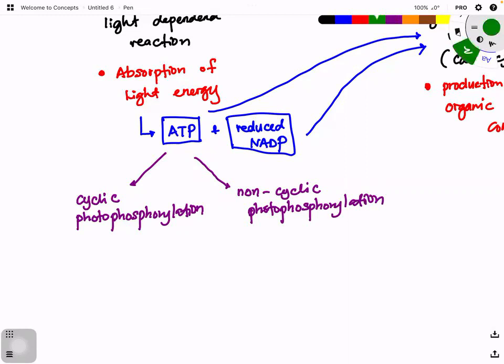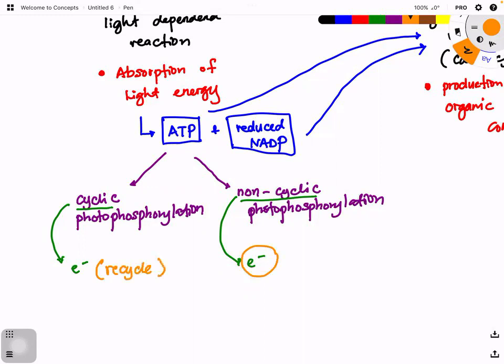The terms cyclic and non-cyclic refer to the movement of electrons. In cyclic photophosphorylation, the electrons are recycled — the molecule that donated electrons gains them back, so there is no loss of electrons. In non-cyclic photophosphorylation, the donor loses the electrons to someone else, so a replacement is needed.